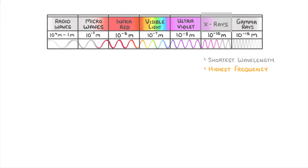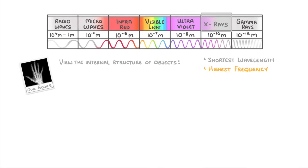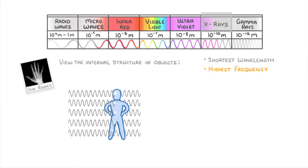If we start with X-rays, their main use is to help us view the internal structure of objects, including our own bodies. The typical X-ray machine, like you get in a hospital, works by firing X-rays through a person's body and recording the ones that get through using a detector plate.